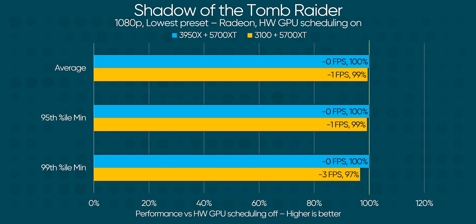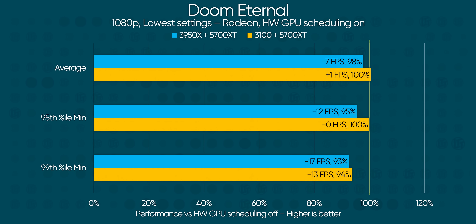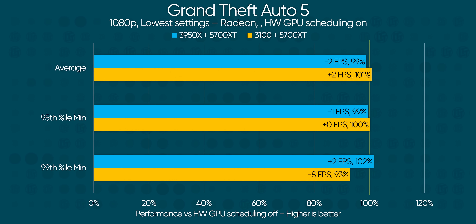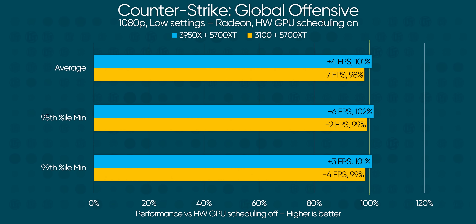Our Radeon 5700 XT did have a better go of things, particularly in combination with the Ryzen 3, where we got mostly normal frame rates pretty much across the board — with the exception of Red Dead Redemption and Doom Eternal with our Ryzen 9. This is probably because the Ryzen 9 has enough cores to handle the scheduling normally, but these games, which are both running the lower-level Vulkan API, are developed with software scheduling in mind and aren't taking advantage of the extra slack. Still, we're not exactly being blown away here, and it's tough to firmly recommend turning hardware GPU scheduling on for gaming based on this scenario alone.